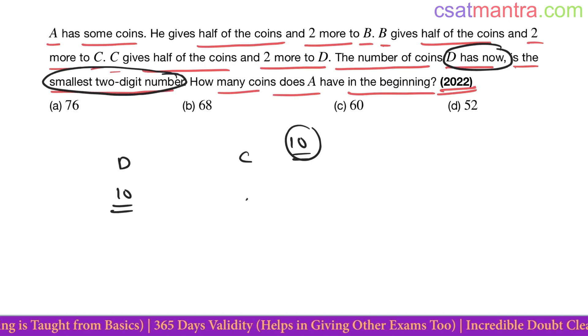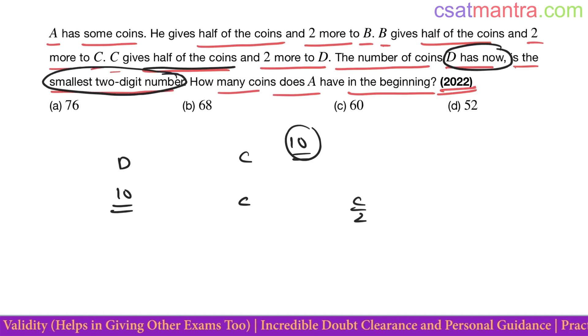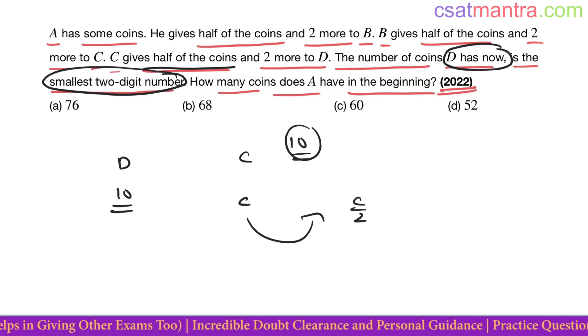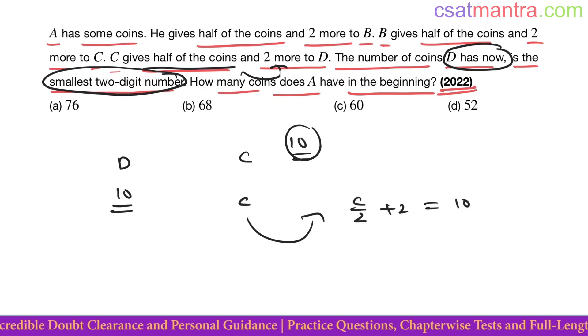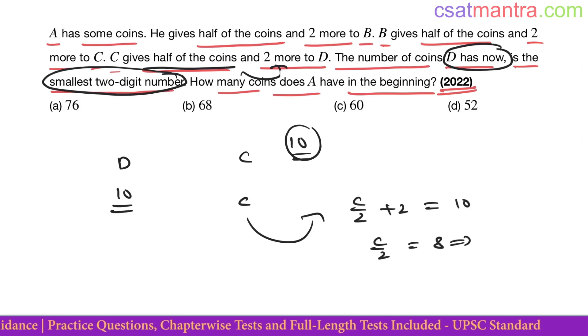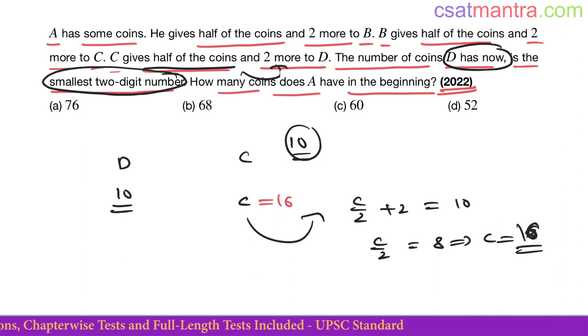Now let's say C has C coins. Half of C is C by 2. C gives half of the coins, half of what he has, half of C, and two more to D. So this is equal 10 now. Whatever he gives, that many coins D has now. So half of C and two more. So C by 2 is equal 10 minus 2, 8. C is 16. So C has 16 coins.